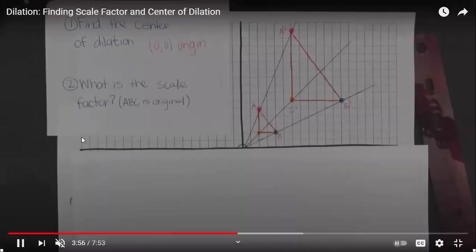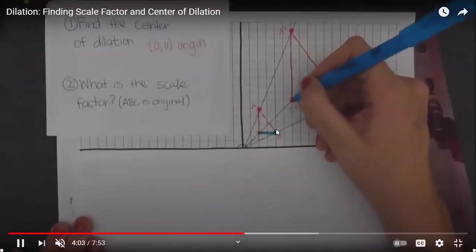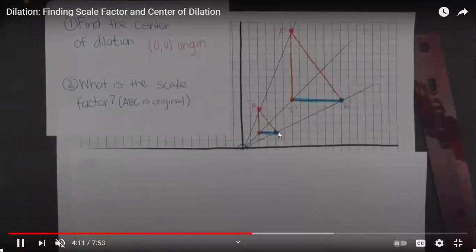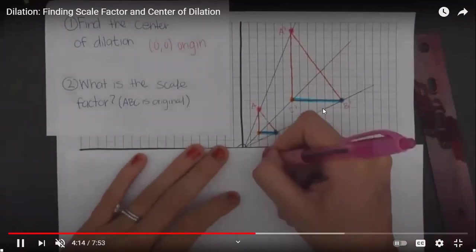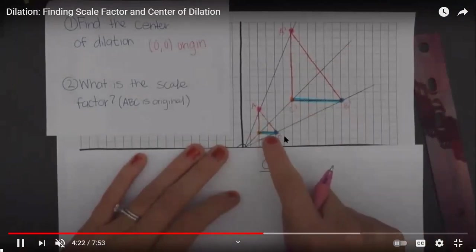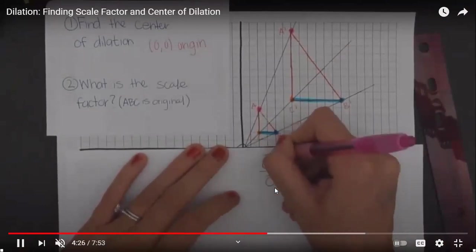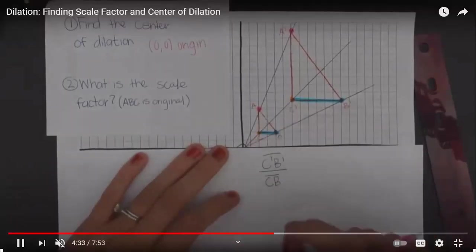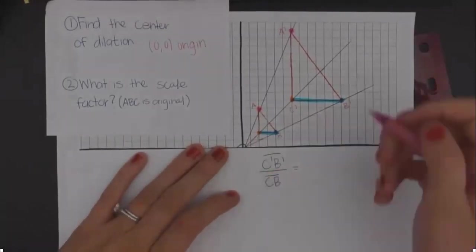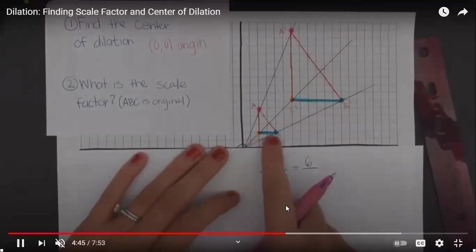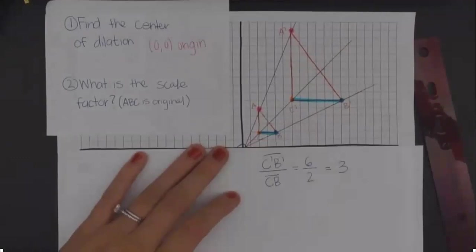The second part is finding the scale factor. We can use side CB and C'B'. Counting the units: CB consists of 2 units and C'B' consists of 6 units. To calculate the scale factor, we write the ratio as image over pre-image. So we have 6 over 2, which means the scale factor equals 3.